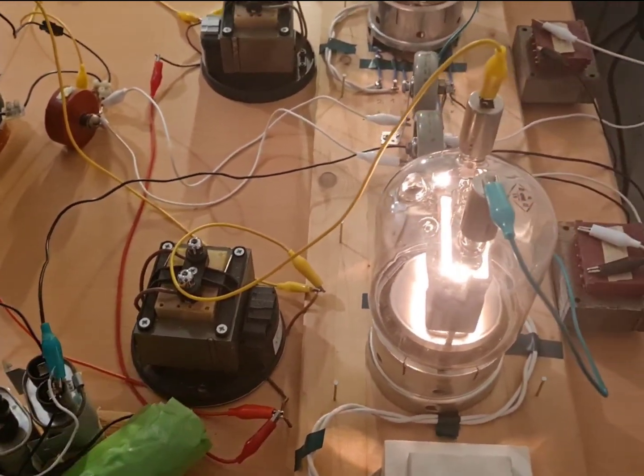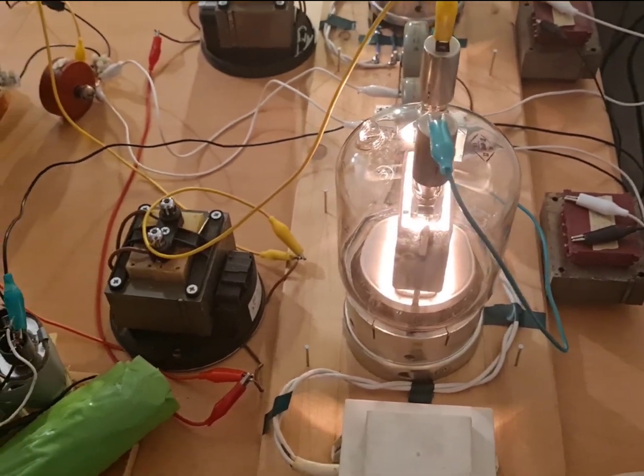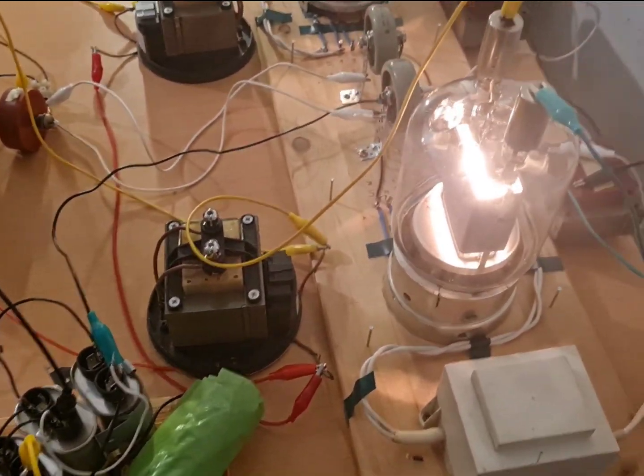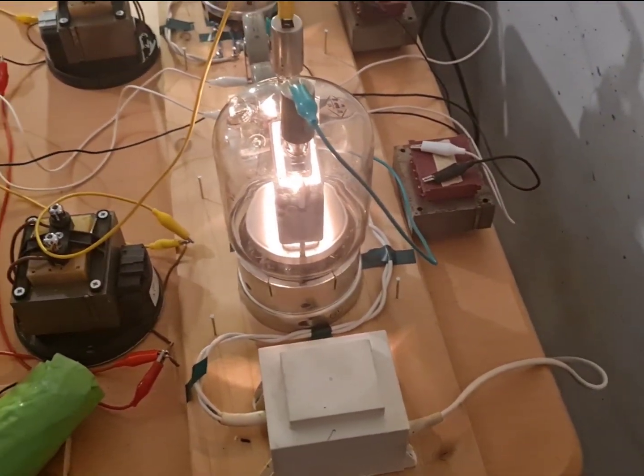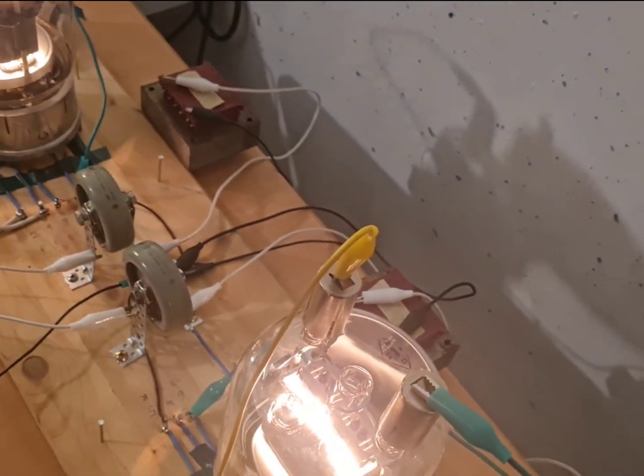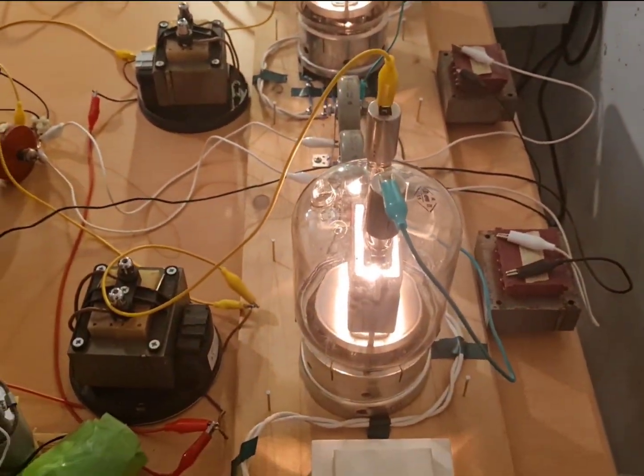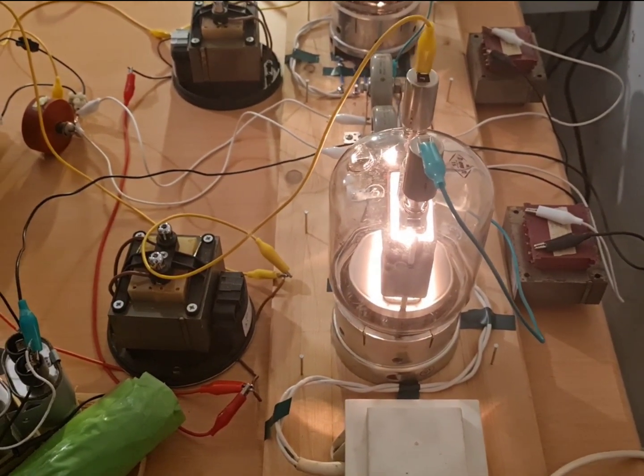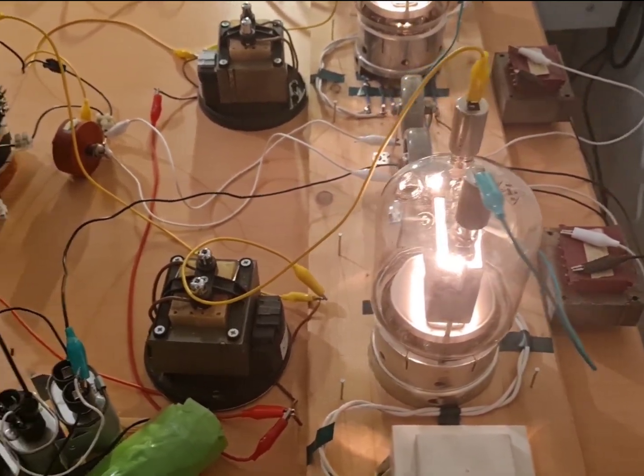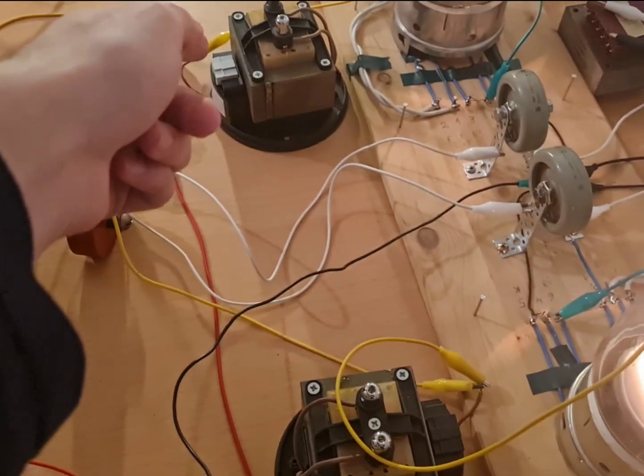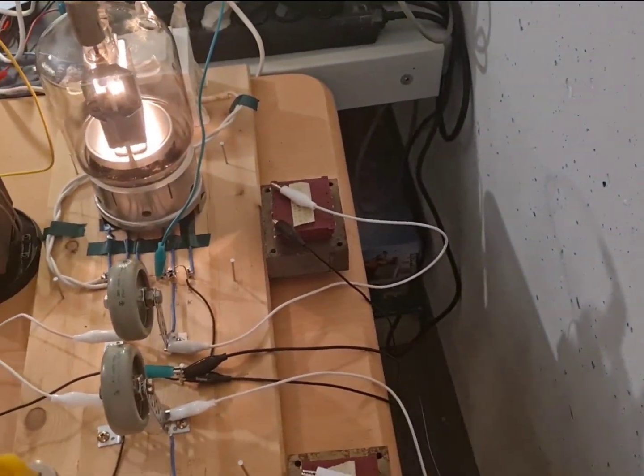These measure out as multiple henries, so they have a high impedance to high frequency, which is beneficial when you're trying to have an RF oscillator, because these are basically acting as chokes here. These two are the anode chokes and these two are the grid chokes.